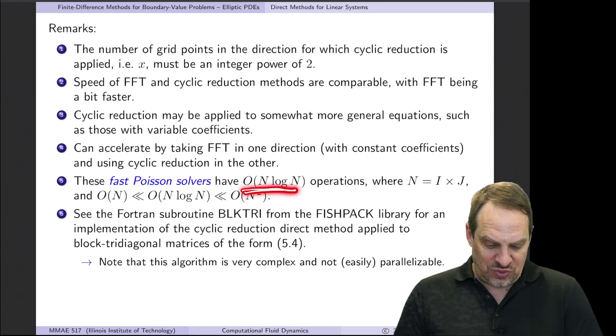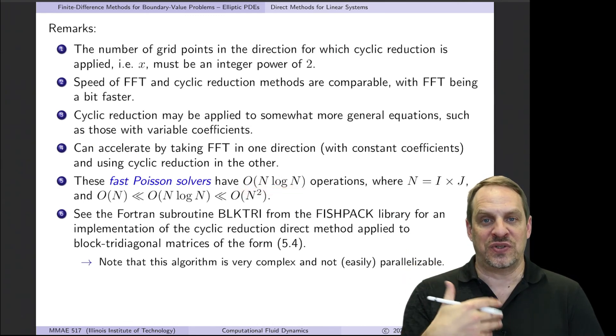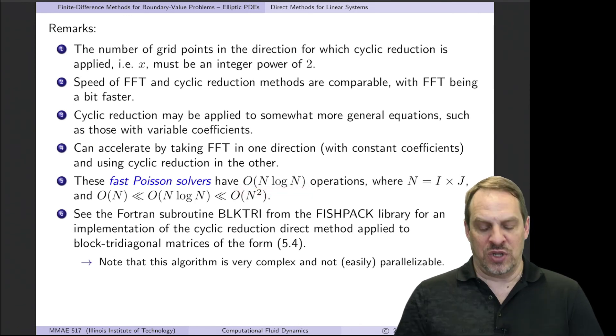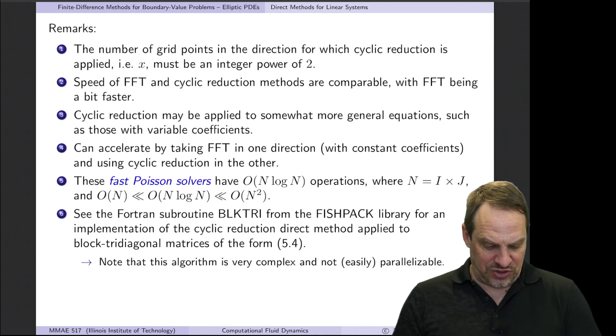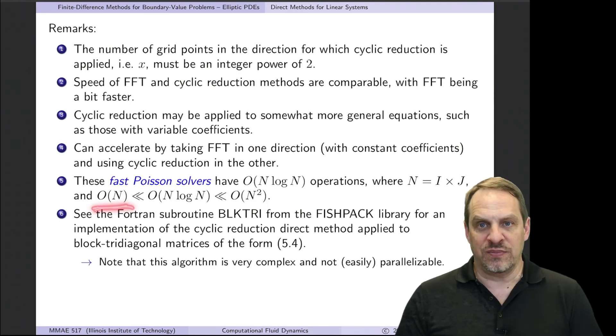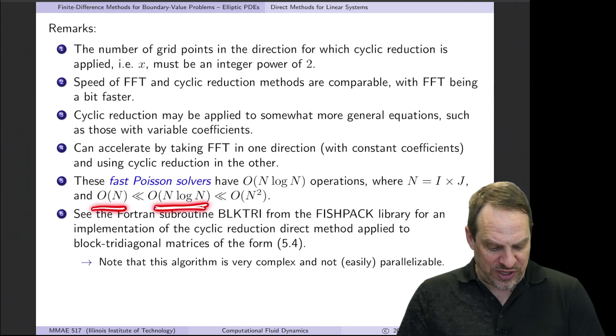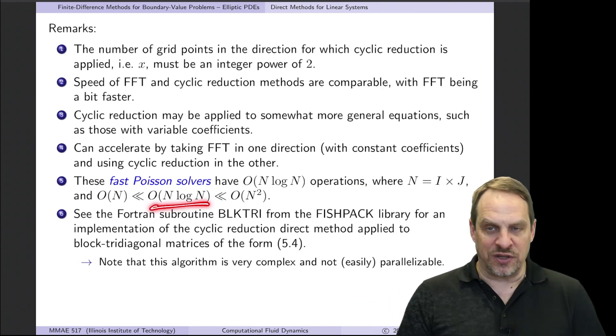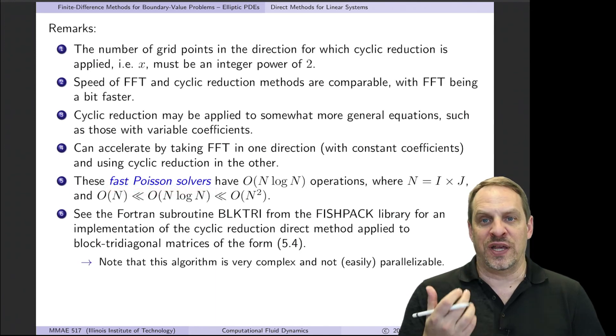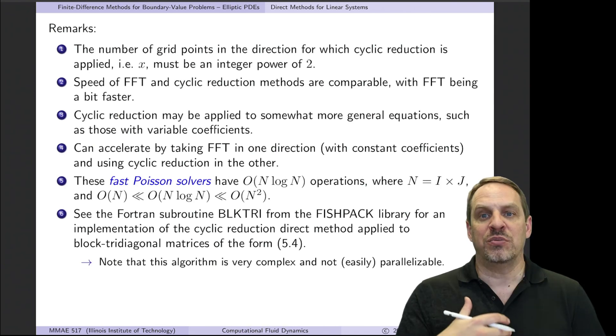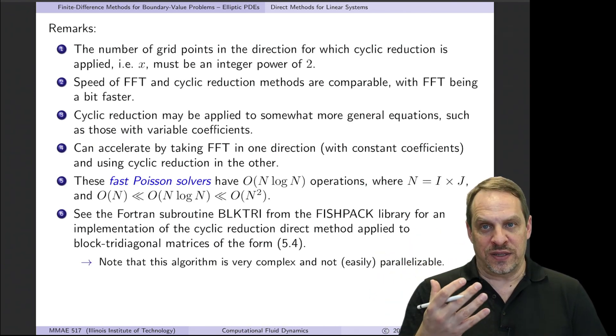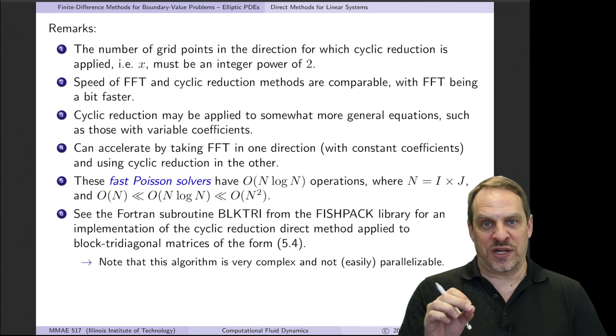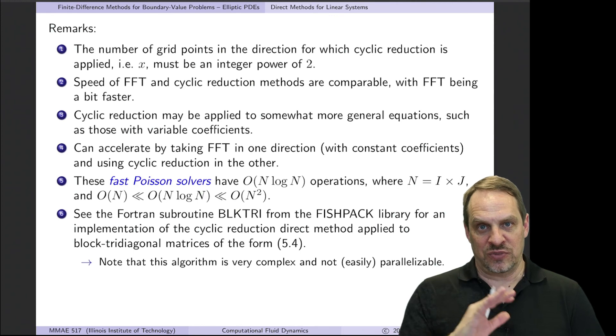The reason why we have cyclic reduction is because you can apply it to a slightly more general set of equations where you have variable coefficients. Remember, FFTs require constant coefficients. Variable coefficients can be treated using cyclic reduction. So one thing you can do, for example, if you had constant coefficients in one direction, variable coefficients in another, you could do FFTs and cyclic reduction in the corresponding directions to get the maximum speed. The overall number of operations, which gives us an indication of the speed and how it scales with the size of the problem, is order n log n. n here is the number of unknowns. n log n is between order n and order n squared. We love order n because that's linear scaling. If it's n log n, that's between these.